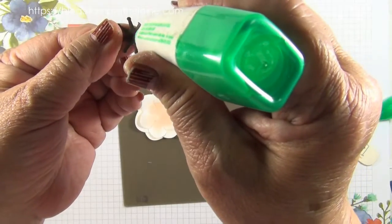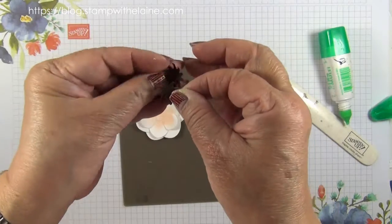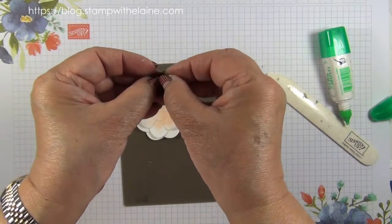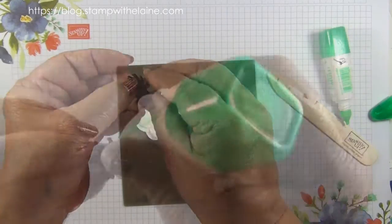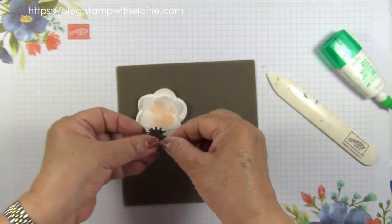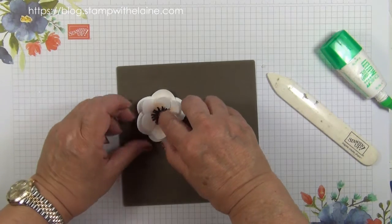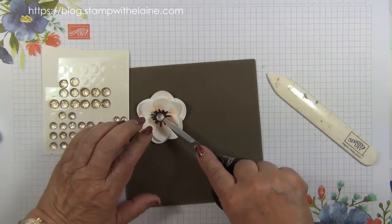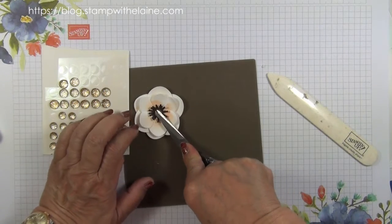Put glue on the little stamen, pop it on the larger one, and pop it in between the other to make it look fuller. Glue on the back of that, pop that in the middle, and press it down.